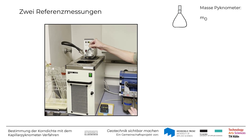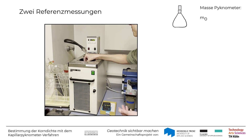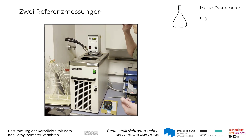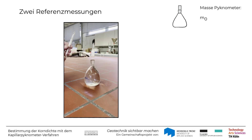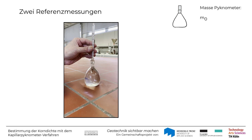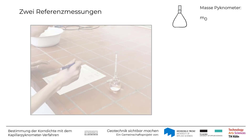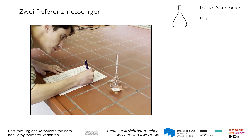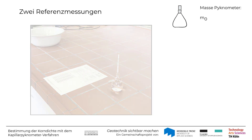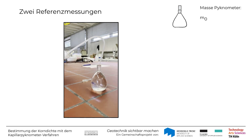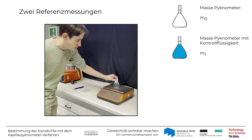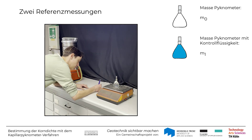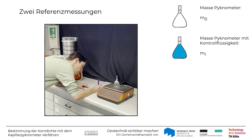Das Pygnometer wird dann für mindestens eine Stunde in ein Wasserbad eingestellt oder für mindestens 16 Stunden in einen Raum mit konstanter Temperatur. Die Temperatur wird notiert und der Flüssigkeitsspiegel der Kontrollflüssigkeit wird überprüft und gegebenenfalls korrigiert. Nach Ablauf der genannten Zeit wird das Pygnometer mit der Kontrollflüssigkeit gewogen und die Masse M1 notiert.